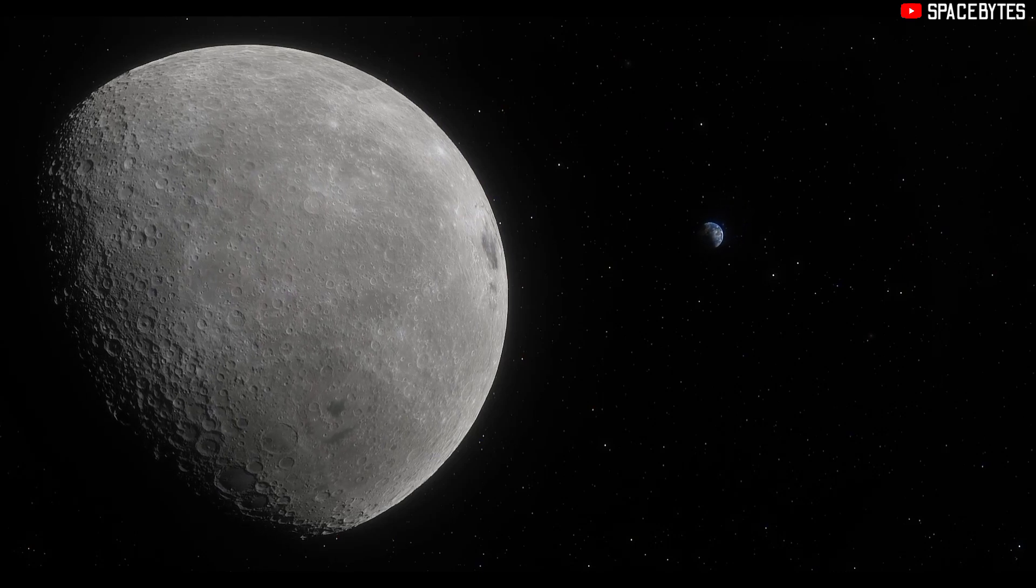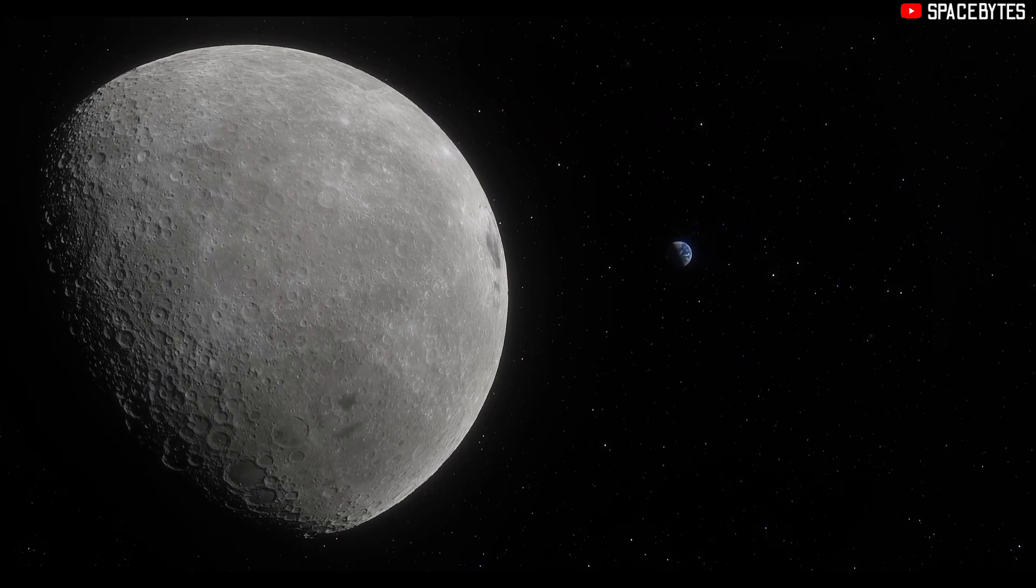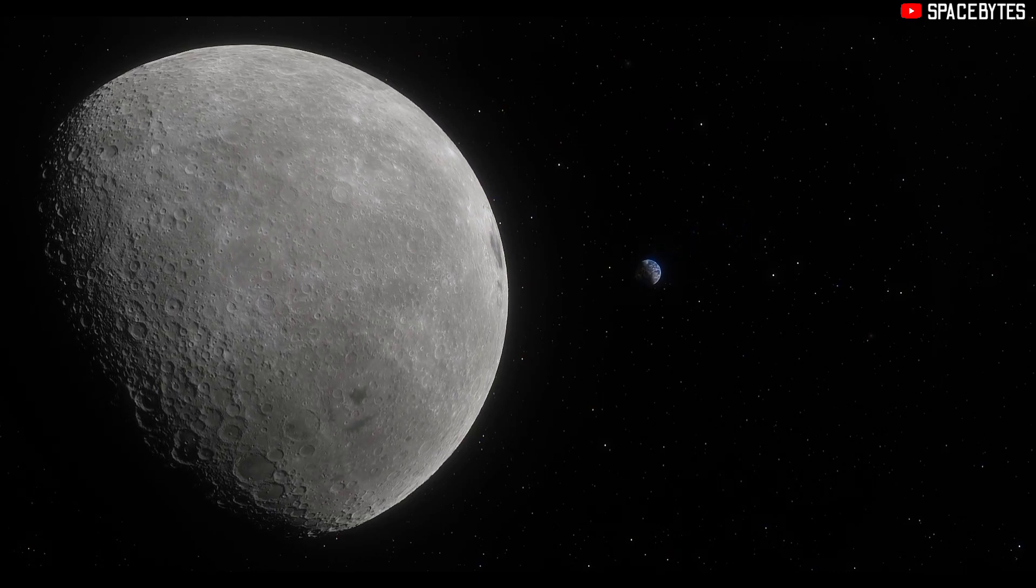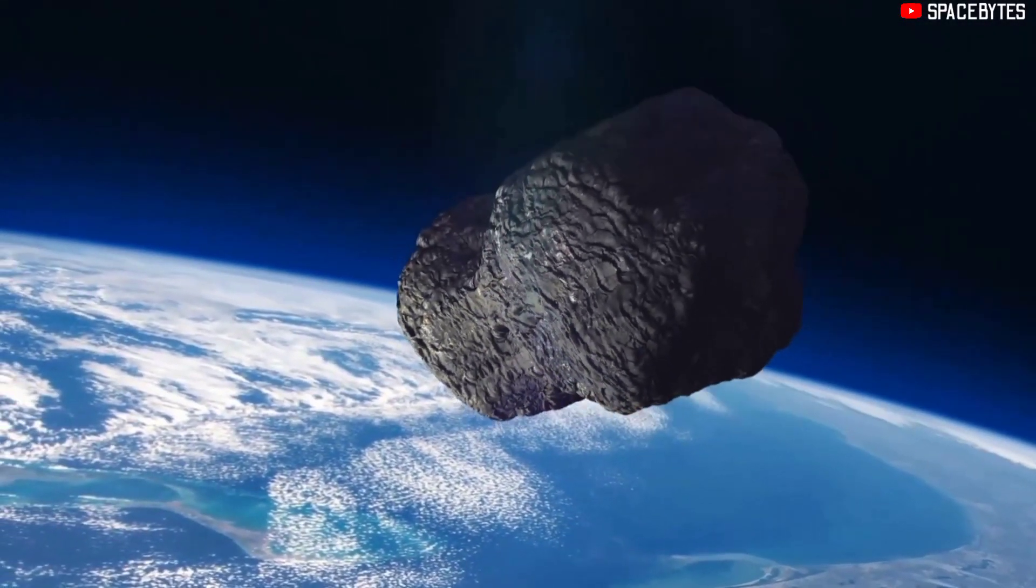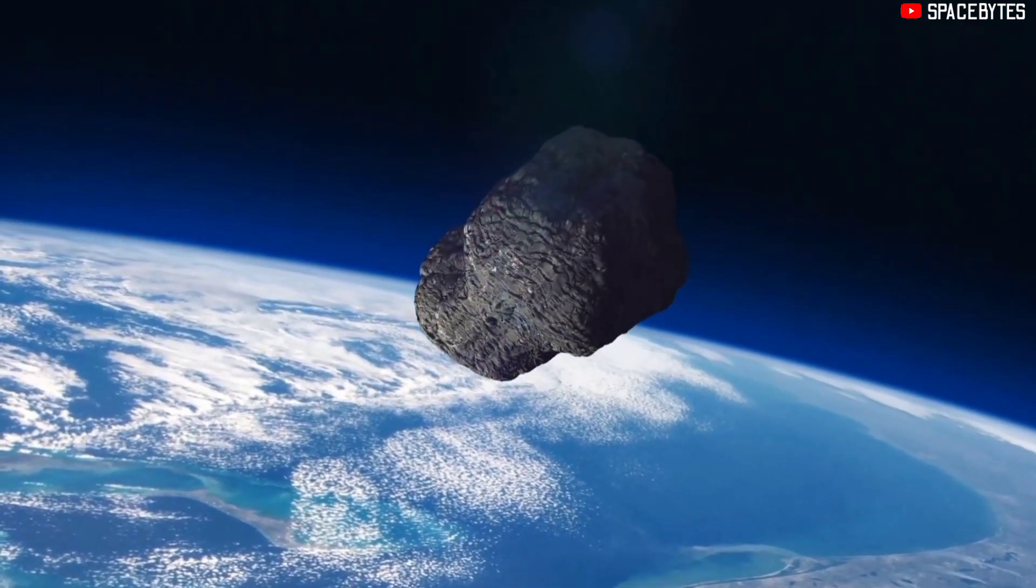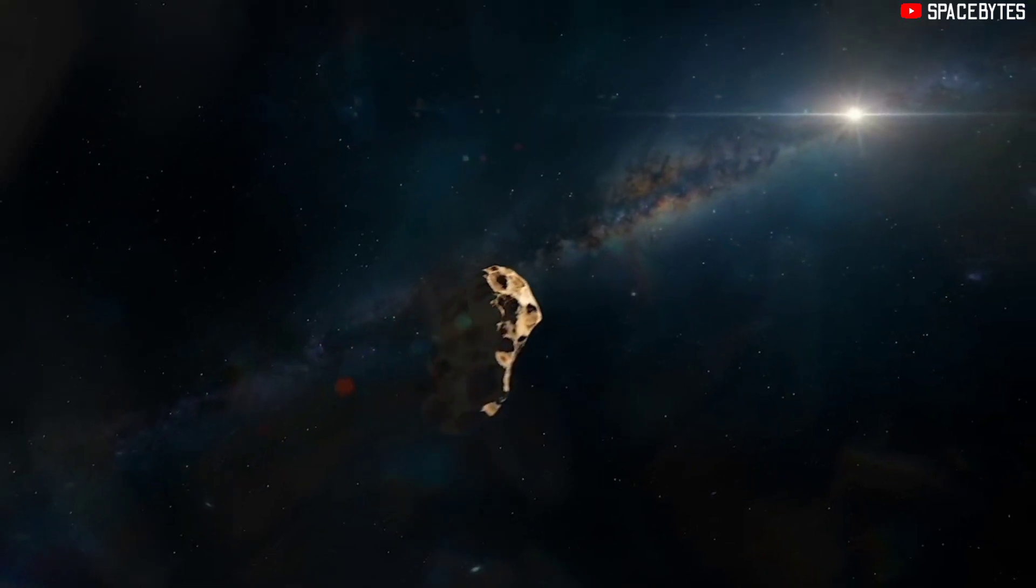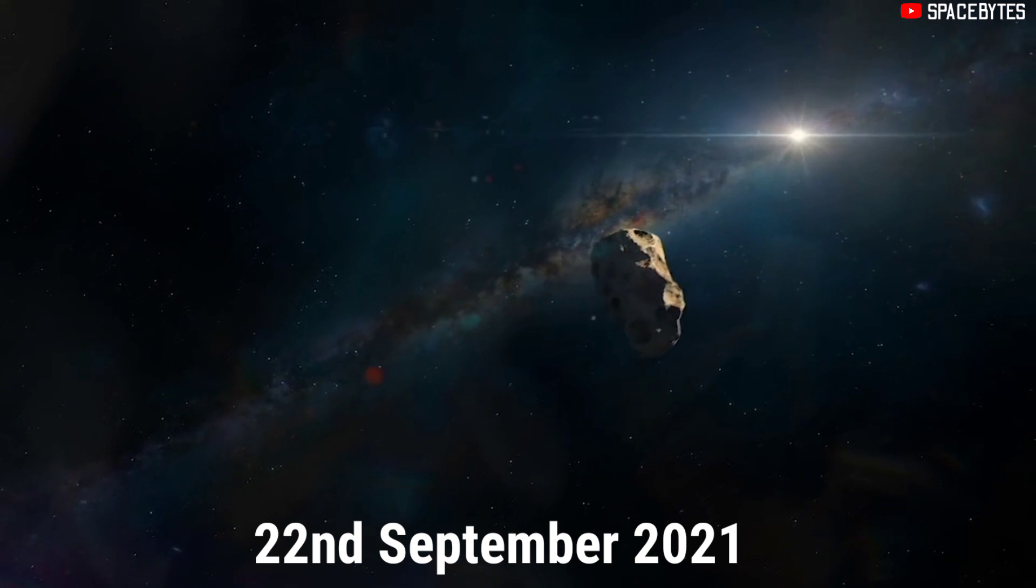Notably, the Moon orbits Earth from a distance of 238,855 miles. It is estimated to pass within 1,498,113 kilometers of the Earth sometime around September 22, 2021.